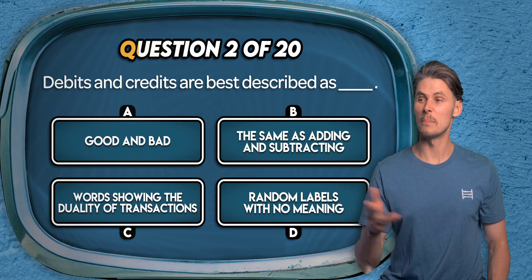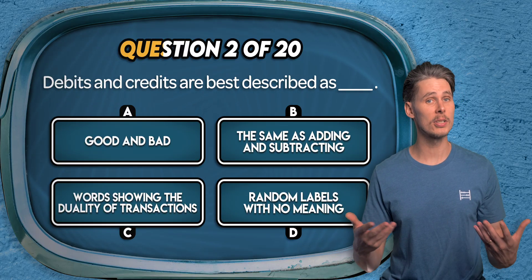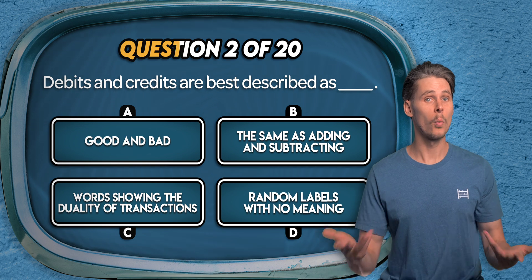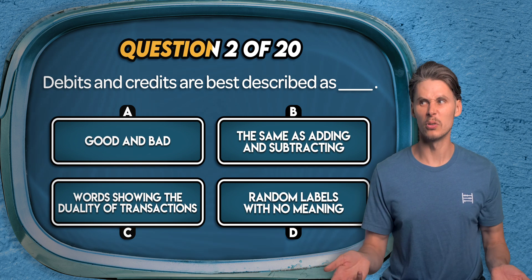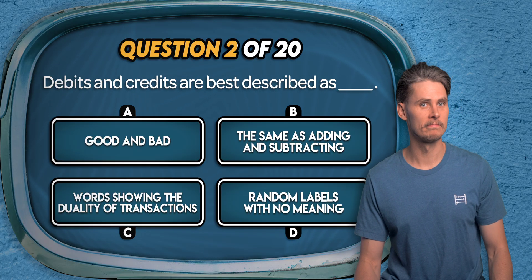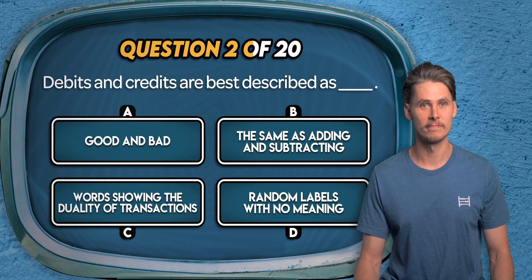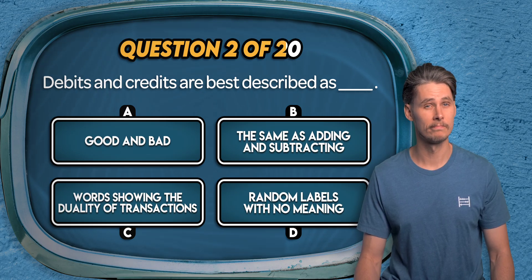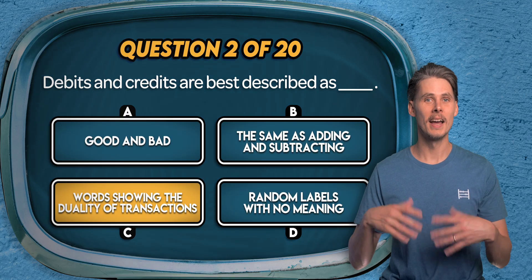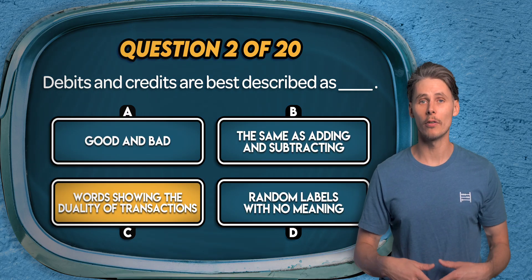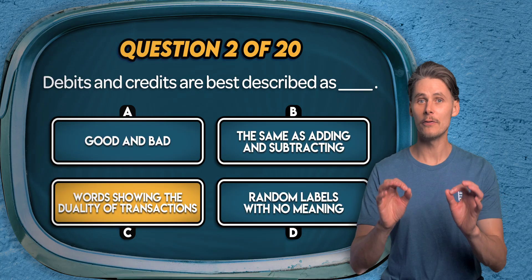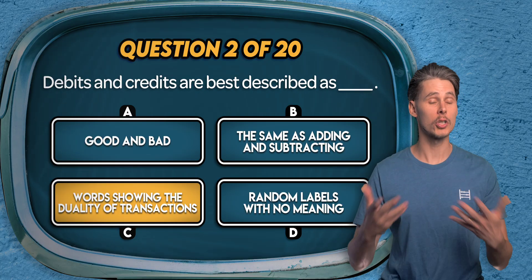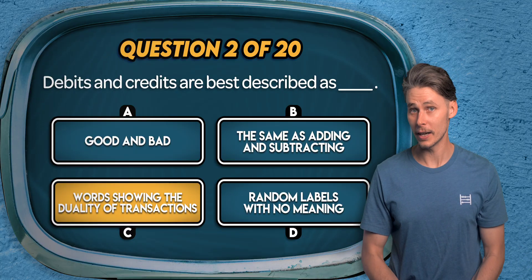Question 2. Debits and credits are best described as: good and bad, the same as adding and subtracting, words showing the duality of transactions, or random labels with no meaning? It's C. Debits and credits are words used to reflect the double-sided nature of financial transactions. Every entry has to balance, which means total debits have to equal total credits.